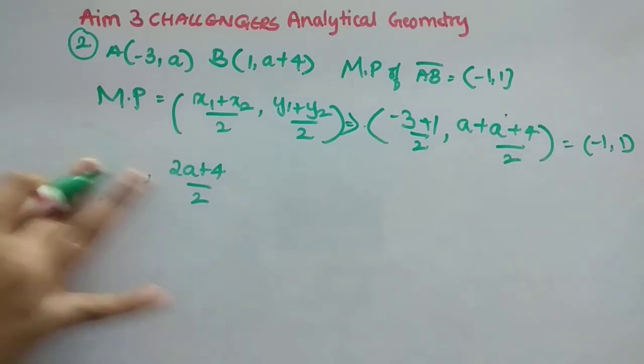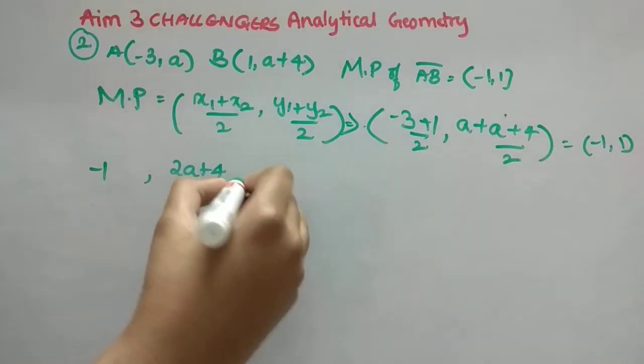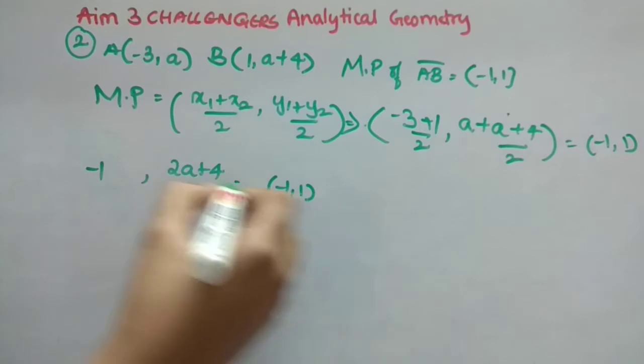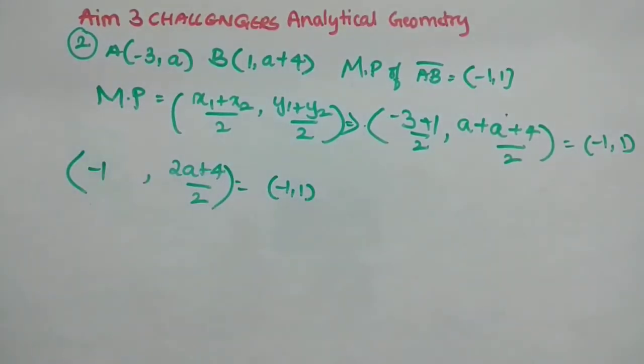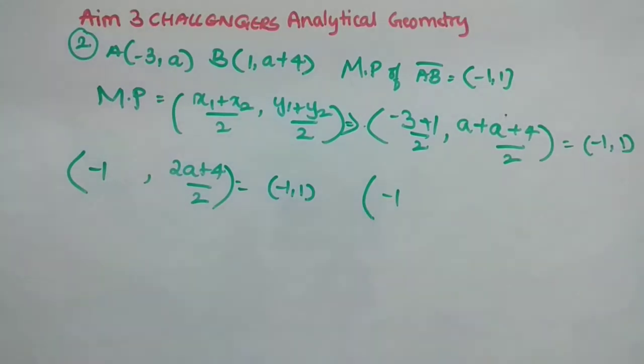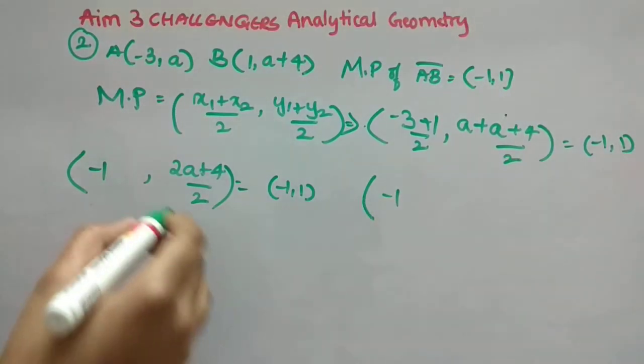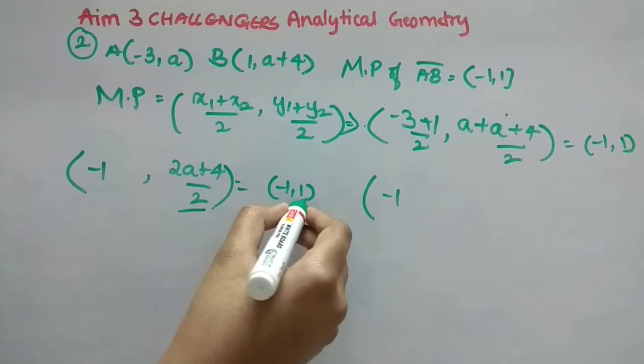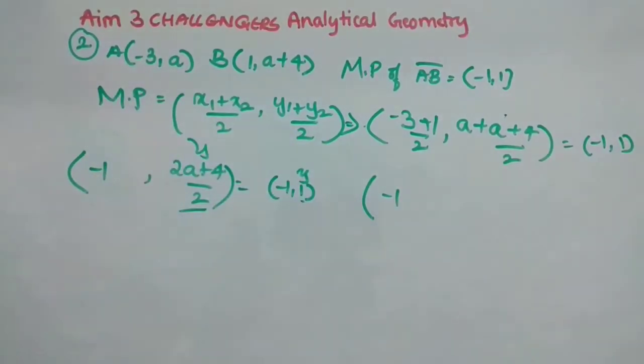So what is x1, it is minus 3, x2 is 1 by 2, comma, y1 is A and y2 is A plus 4 by 2. Put brackets for sure. So one thing I have missed here is, midpoint we already know, but I have not written here. So just put one arrow mark and write it here as minus 1 comma 1, that is the midpoint.